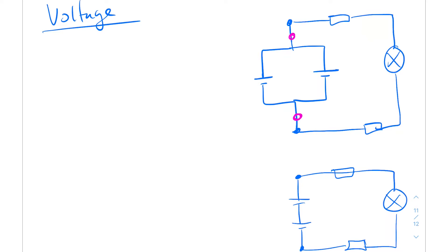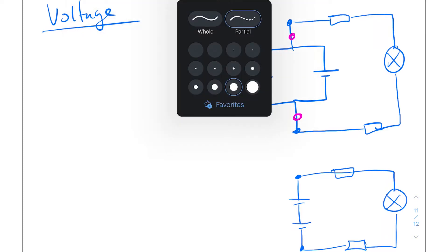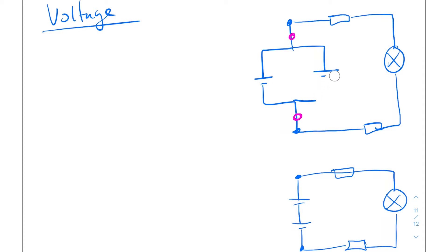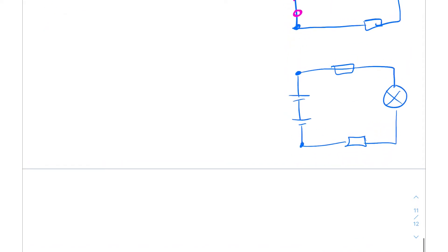One way we can redraw this parallel circuit is we can get rid of both voltage sources and just make it one. So whatever the value was - if it was 10 volts - then this one would now just be 10 volts. And then when it comes to voltages in series, the potential will be lowest at one end and highest at the other.